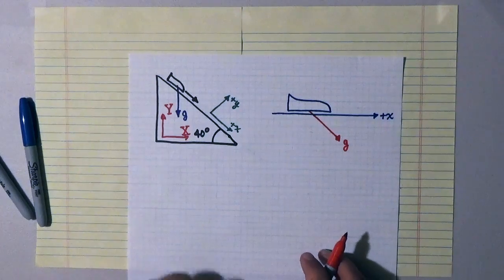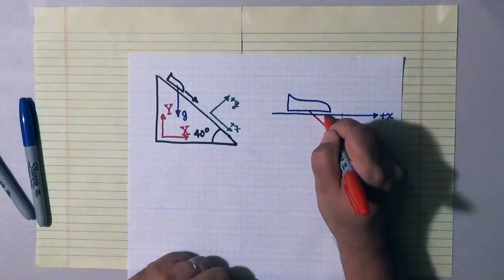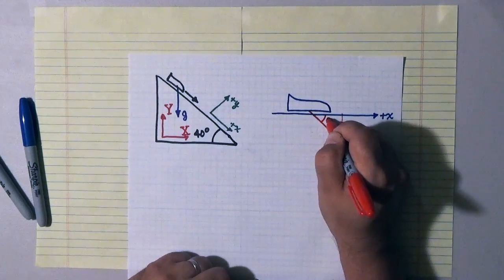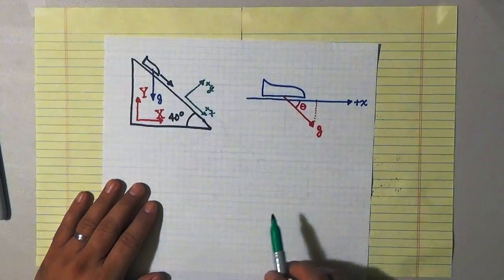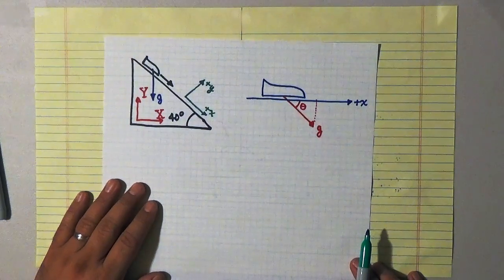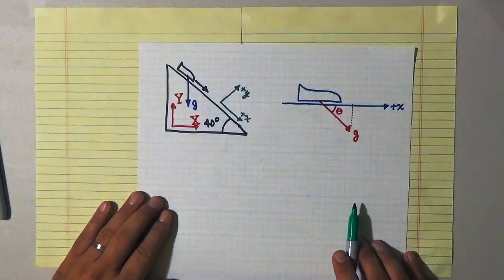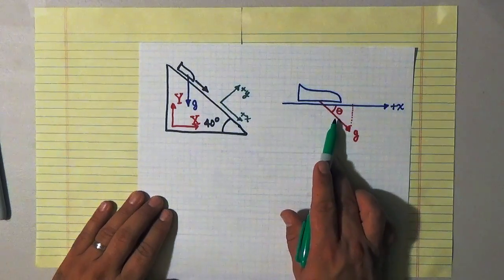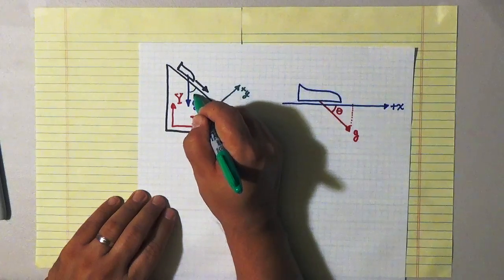So I could figure out what the component of that vector was if I knew some angles. In particular if I knew that angle theta right there. So how am I going to figure out what that angle theta is? Well in order to figure out that angle theta right there I go back to my original picture. That angle theta that I've marked there is actually this angle right here.